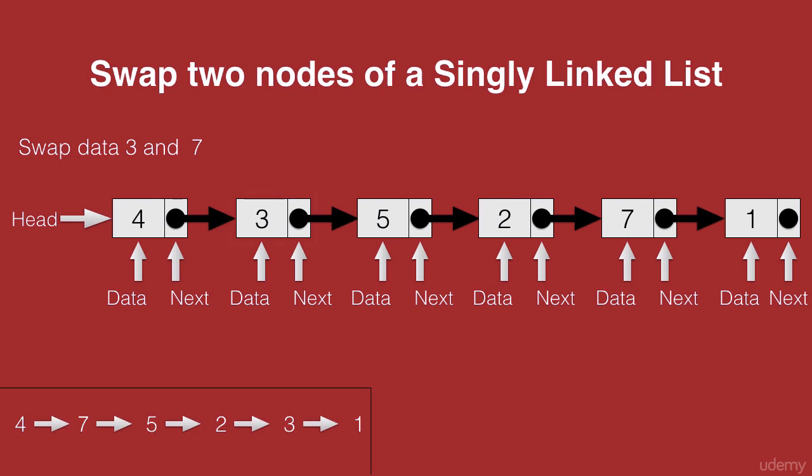So we first need to have the details of the nodes which we are trying to swap, which is the node with the data 3 and the node with the data 7. We also need to keep track of the previous nodes since we should be changing their addresses. So we keep track of the node with the data 4 and the node with the data 2.